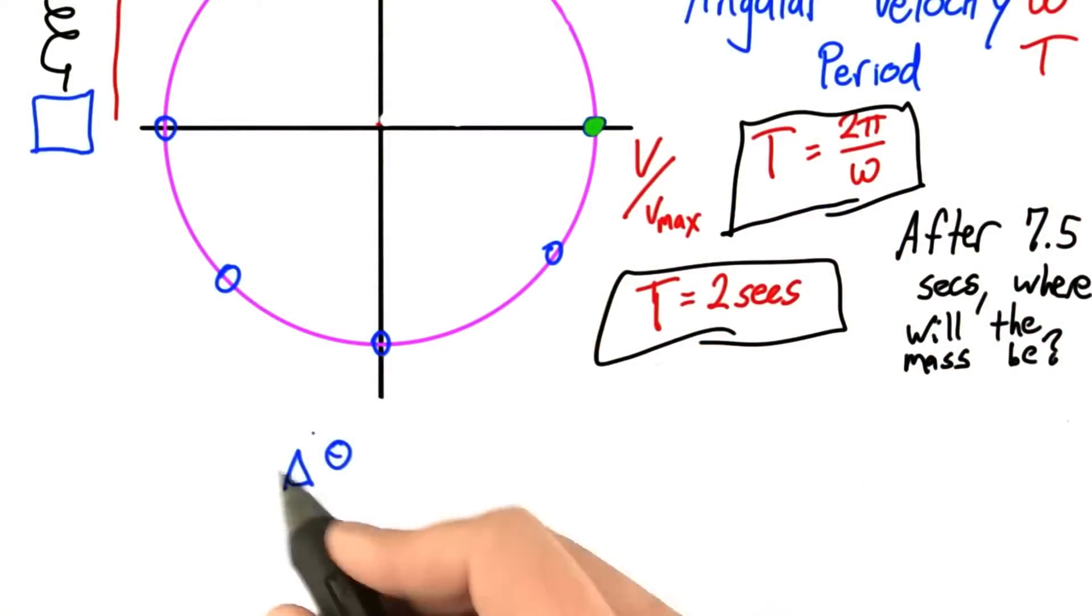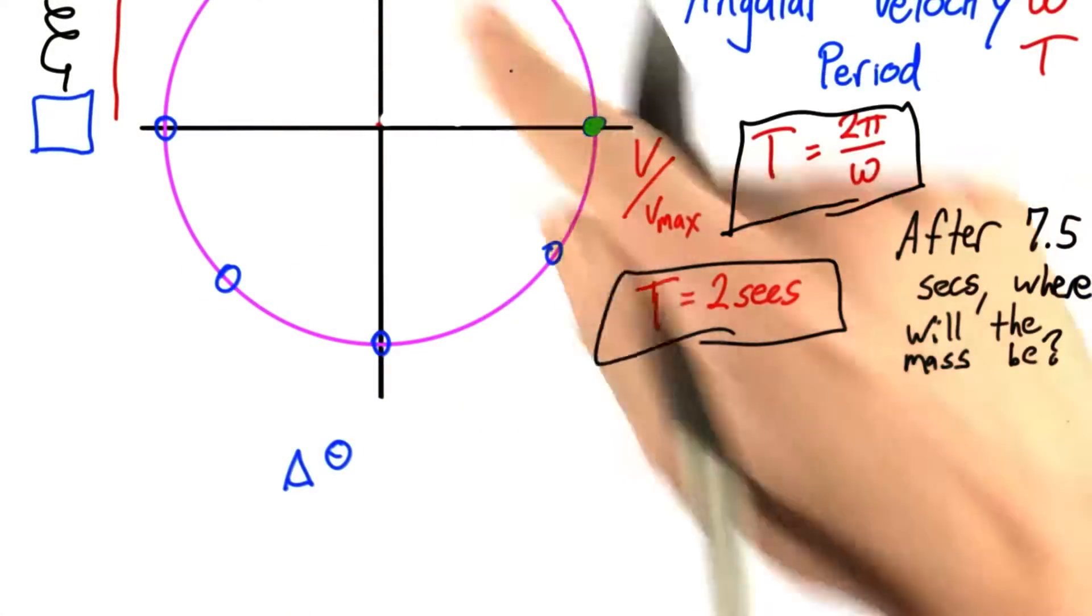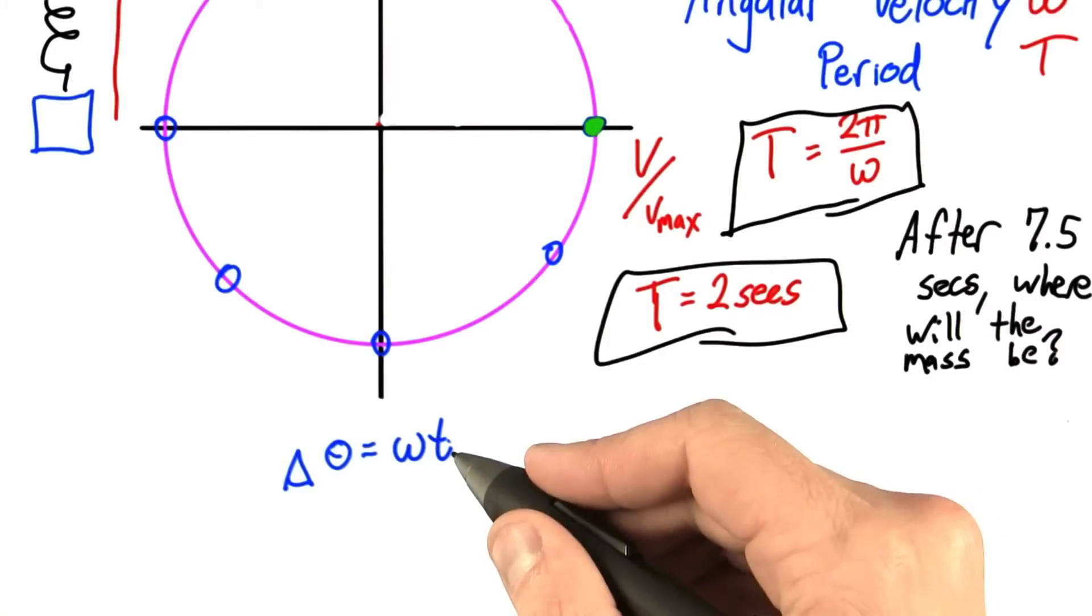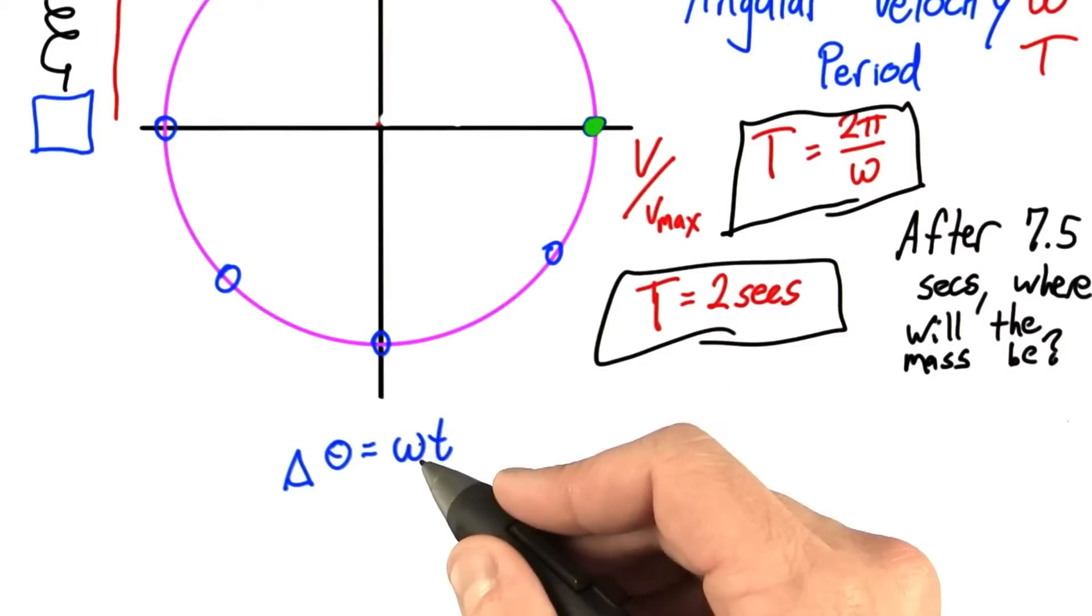How else could we have solved this? The amount of angle we go through in a certain amount of time is equal to omega times t. I know that t is 7.5 seconds. How can I find omega?